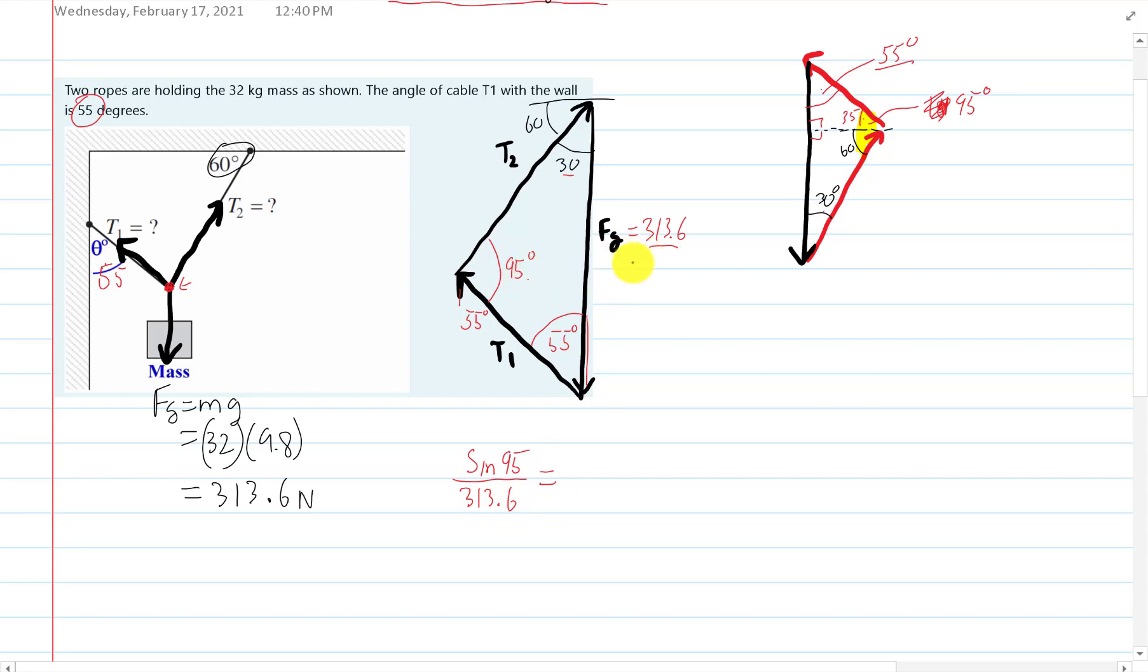That's the sine law. Has to equal, let's try for T1, that has to equal sine of 30 over T1. At that point I rearrange it and I get T1 is equal to 313.6 times the sine of 30 divided by the sine of 95.